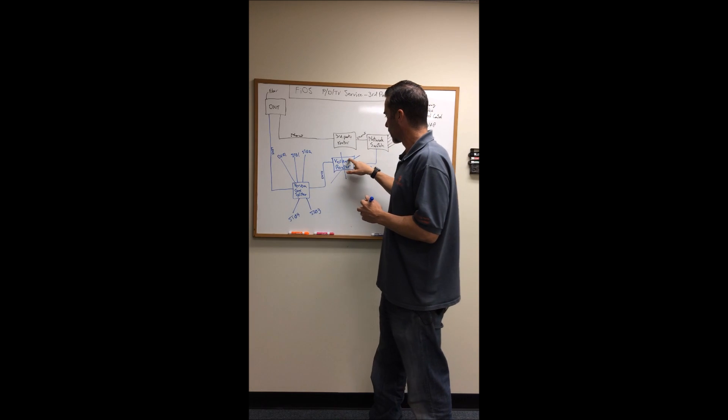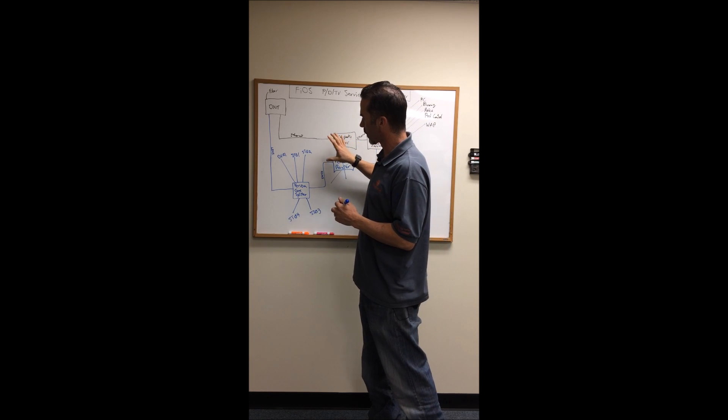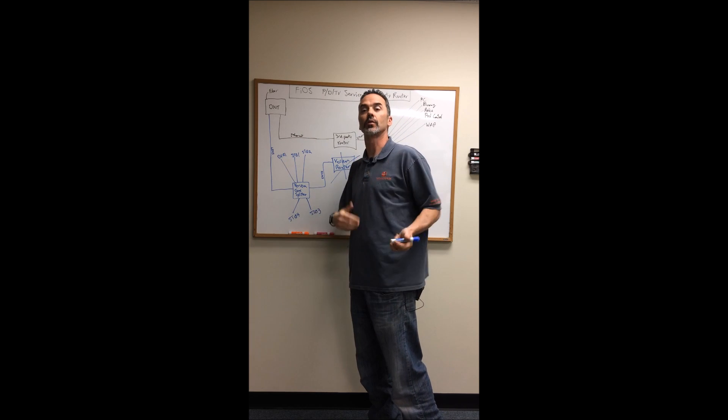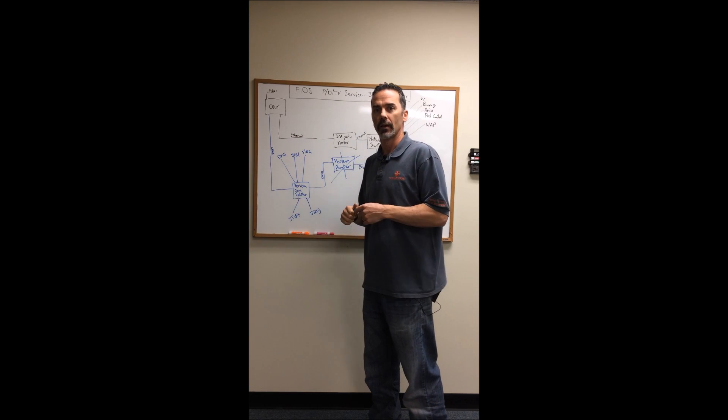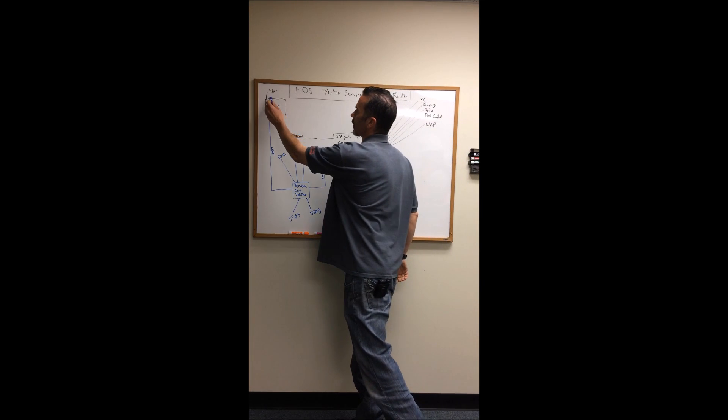So basically this Verizon router will take a network connection and allow all the set top boxes that are connected via coax to also have a network connection. Now a sneaky little trick that Verizon Fios does is this ONT is actually capable of sending out network over the coax and not needing this at all.